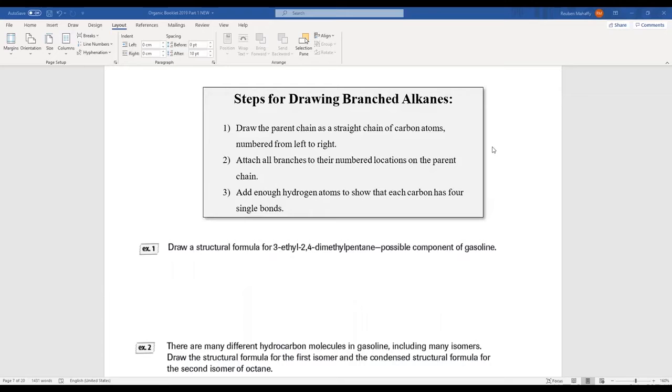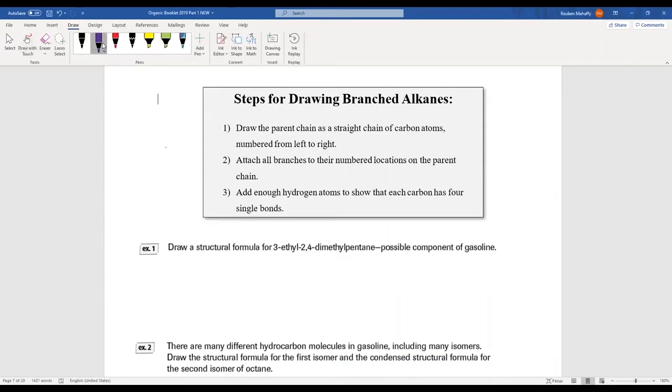I have some steps here for you on page seven. What you're going to do first is always draw out the parent chain first because that's going to help to orient you, and you can number it however you like because you're the one who's getting to draw it this time. Then you can add your branches to the location and then you can fill things up with hydrogen atoms.